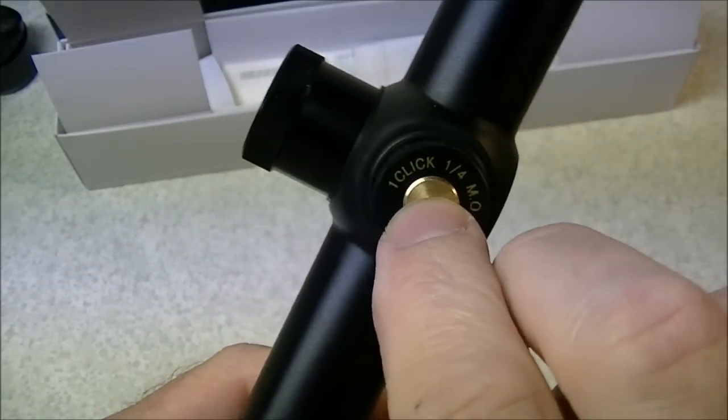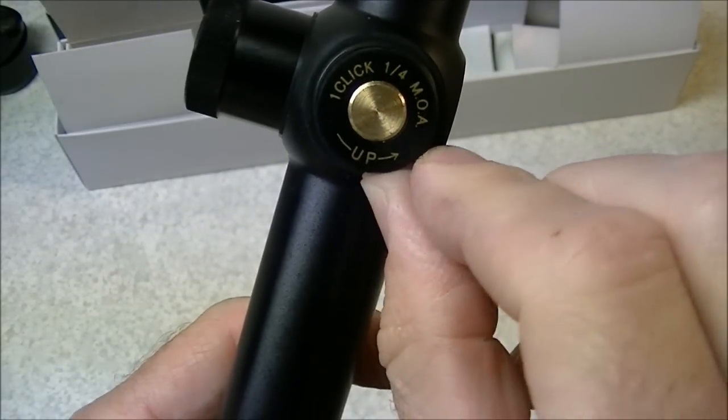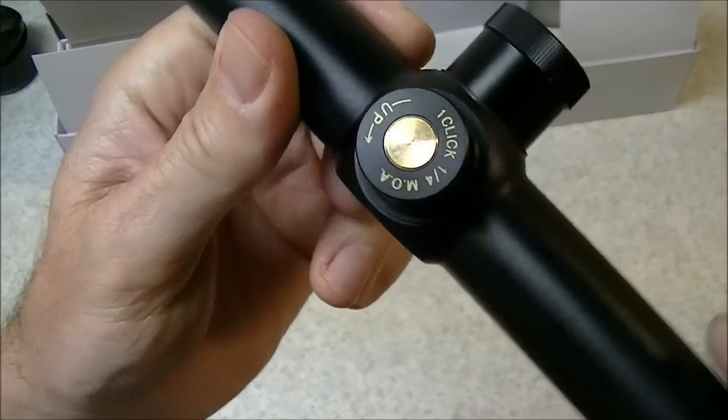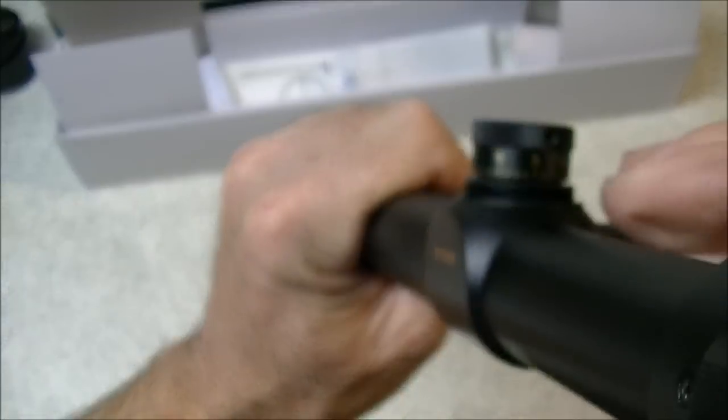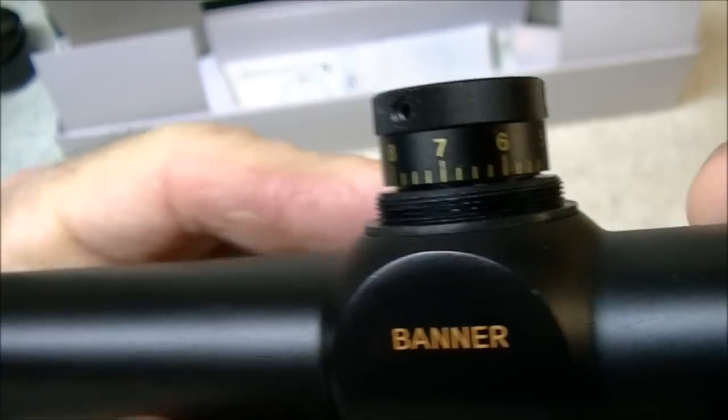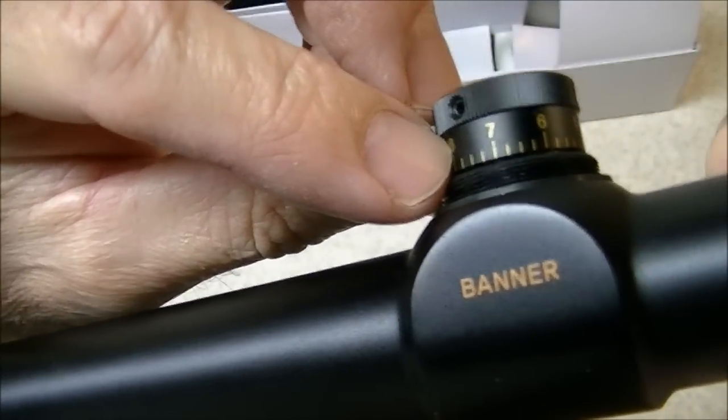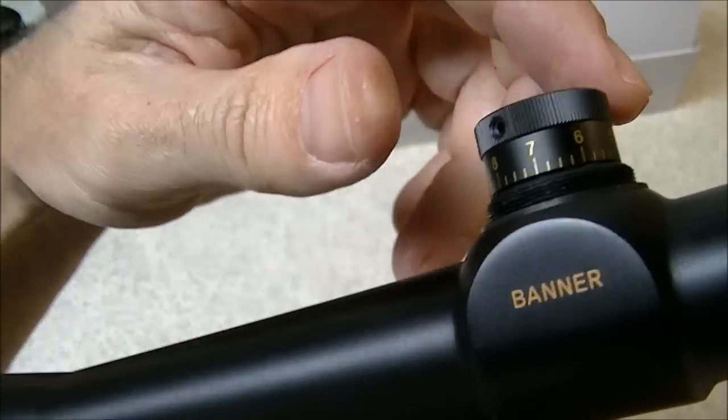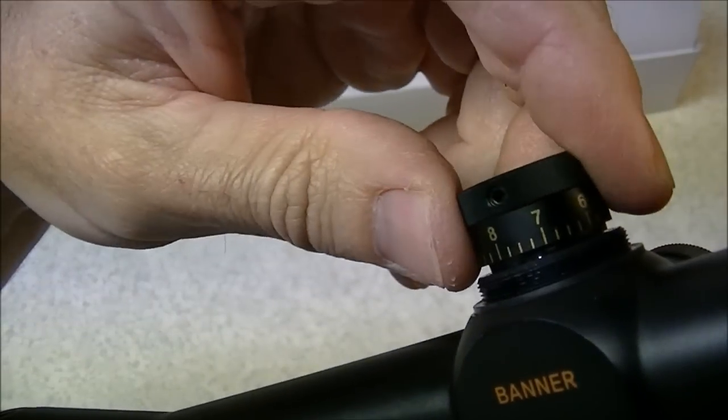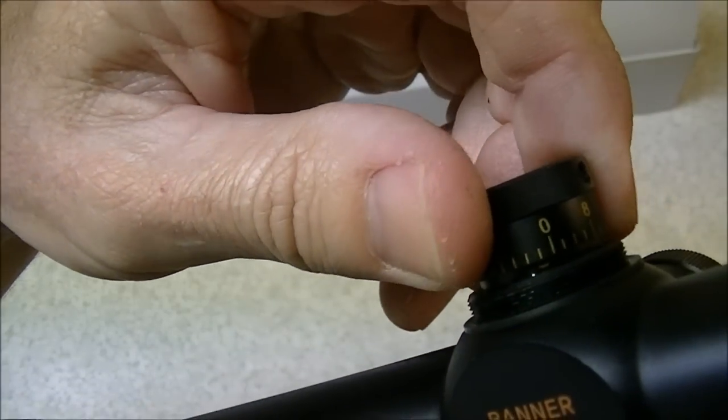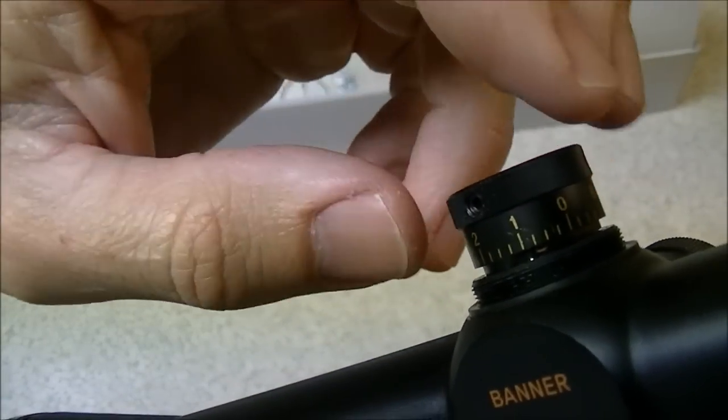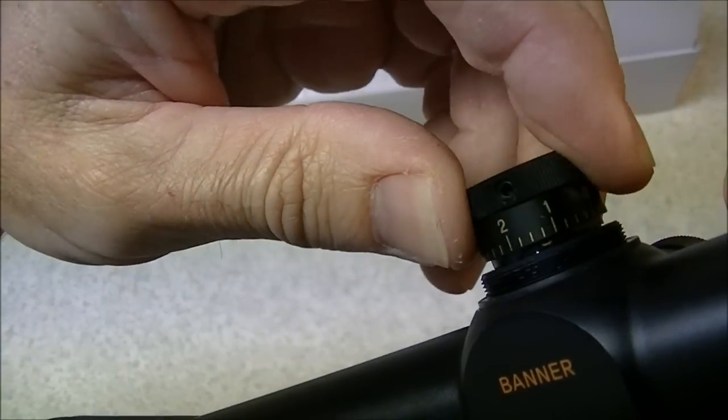We've got fingertip adjustable windage and elevation. As you can see here it says one click equals one quarter minute of angle which is very close to a quarter of an inch at 100 yards, and we've got the direction on here of course to tell you which way to move. On the side of the turrets you can see we've got a scale here and each of these is one minute of angle between these and they've got the quarter minutes marked off on the lines. You can hear the adjustments so there's a spring detent inside here which holds the adjustments in place and gives you an audible feedback when you make adjustments, and you've also got a tactile feedback because you can actually feel that snap into place.